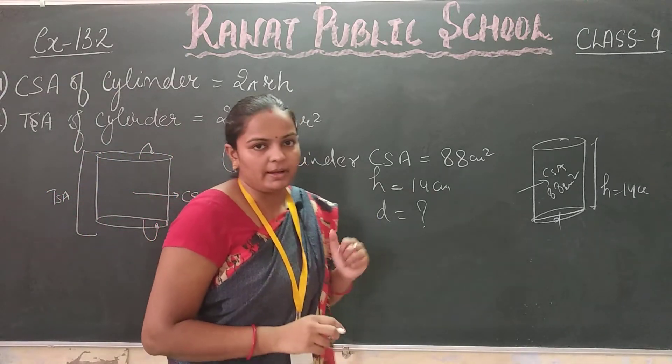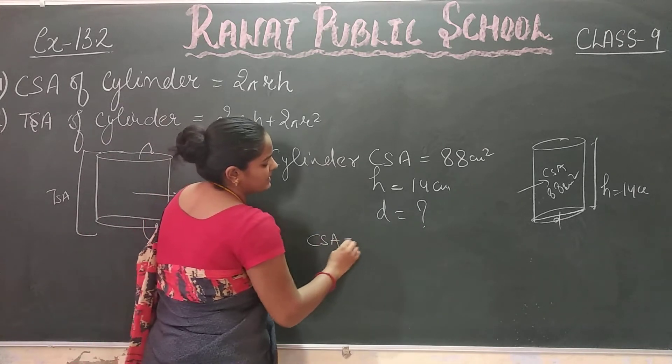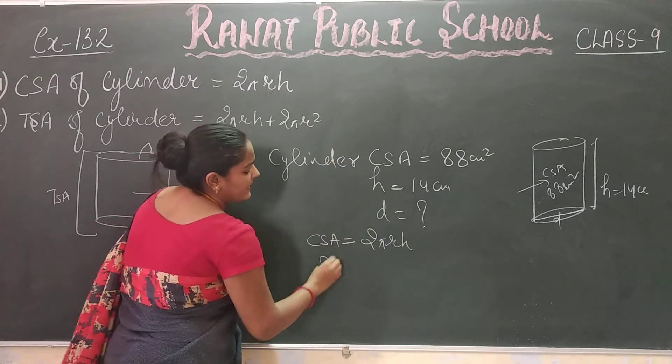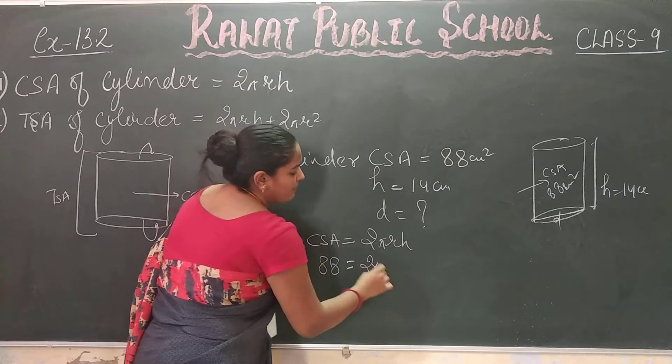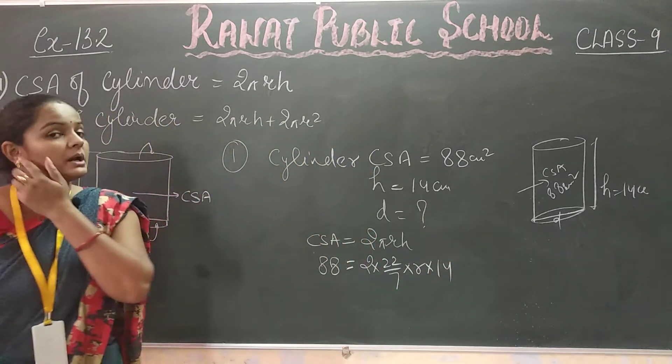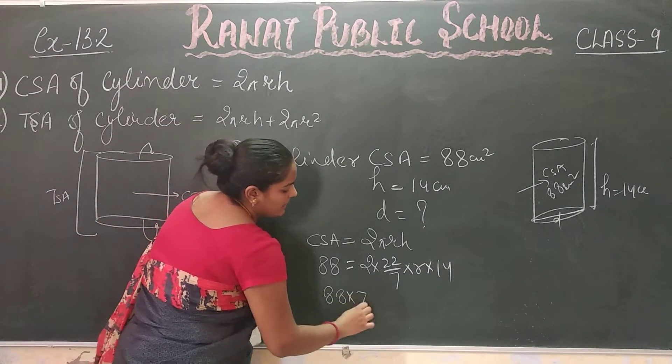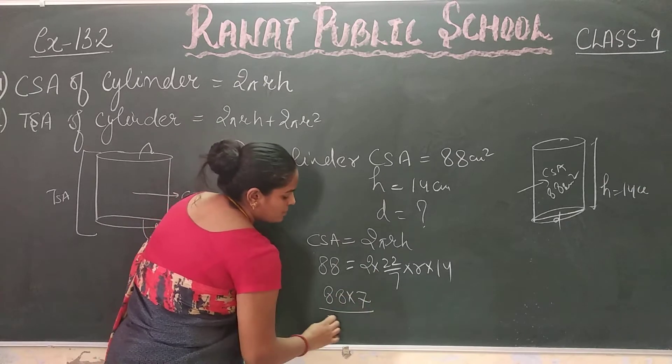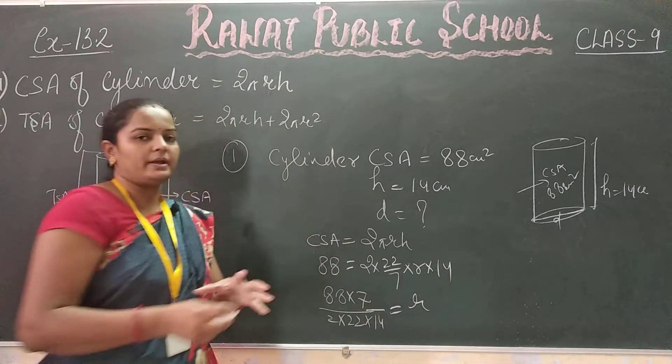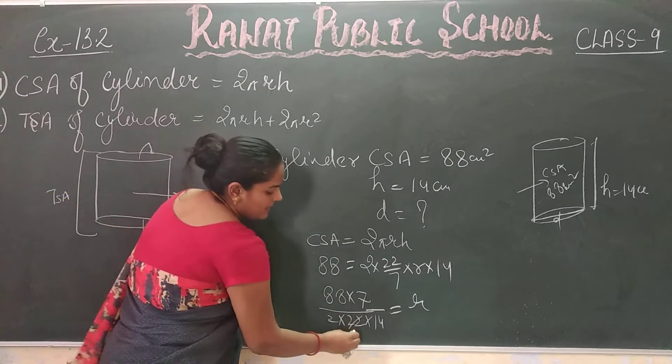We will find the radius of the cylinder. CSA of cylinder is 2πrh. So CSA equals 88 cm². Using 2 times 22/7 times r times 14, we can find r. 88 equals 2 times 22/7 times r times 14. Solving this, r equals 1 cm.